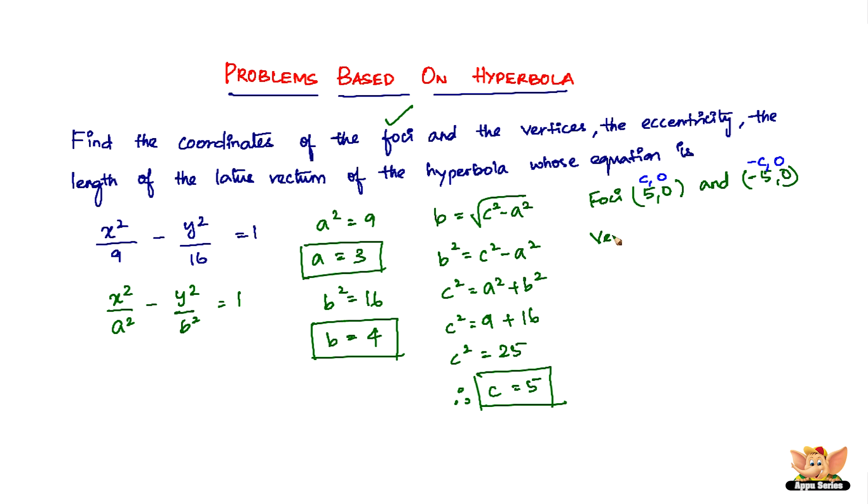And the vertices, the coordinates of the vertices, the vertex is nothing but a, 0 and minus a, 0. So it will be 3, 0 and minus 3, 0. So for your reference, let me write here that the vertex standard coordinates is a, 0 and minus a, 0. So that's how I got the vertices.